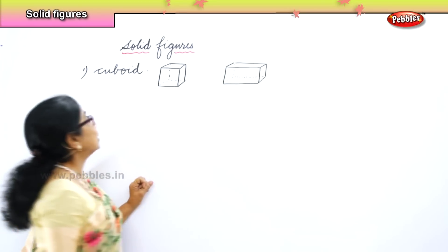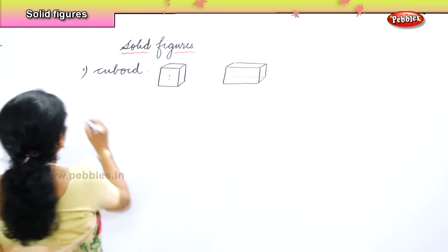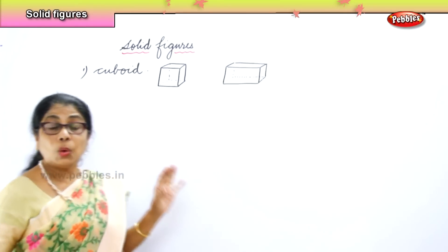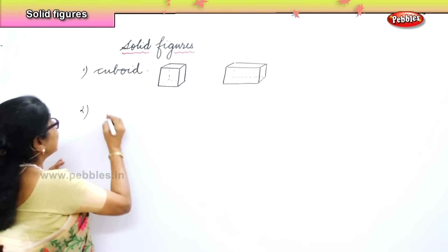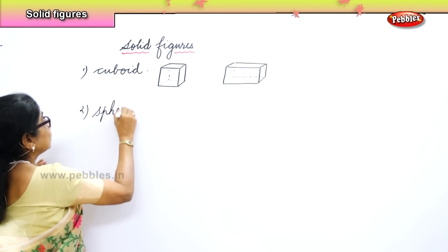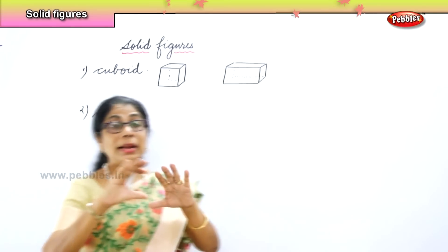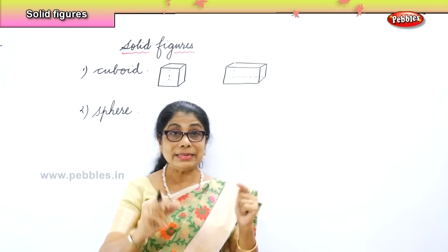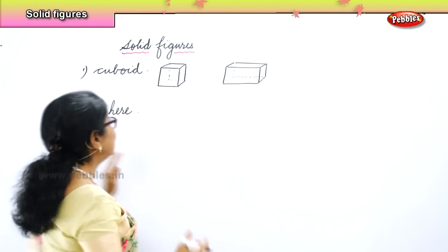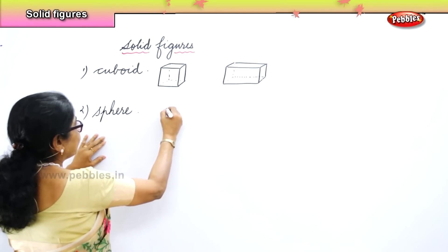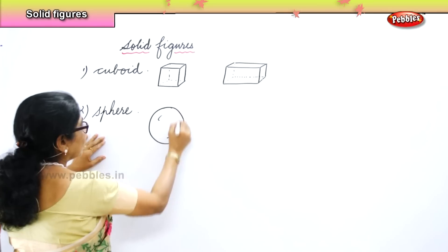These are called cuboids. Next we have circle — we said the plane figure. We learnt what is the solid form: it is called a sphere. The ball is a sphere. The bangle is a circle, but the solid form of circle is a sphere — that is a ball.